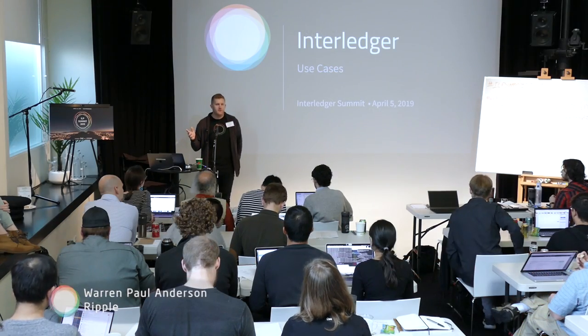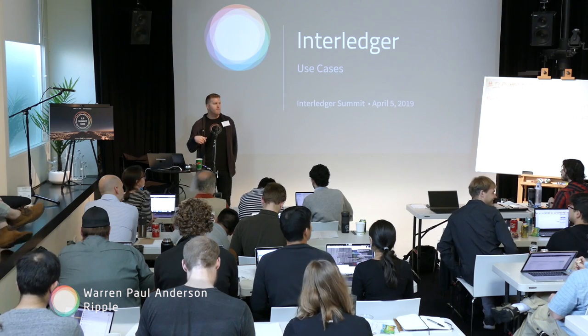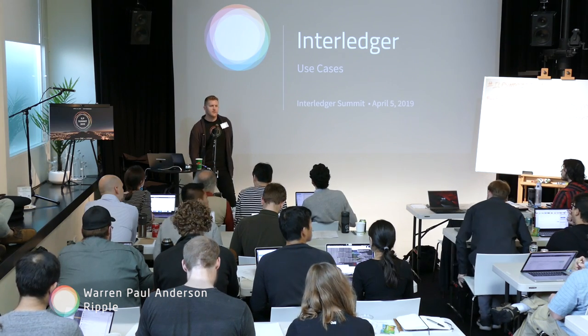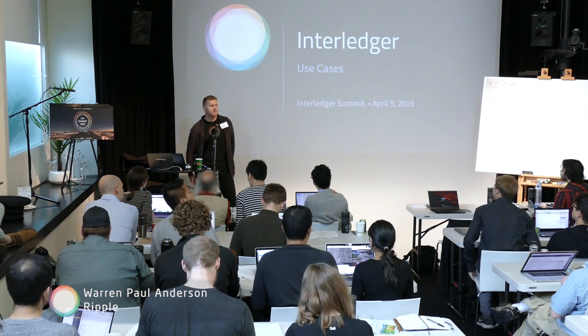My name is Warren Paul Anderson. I'm on the product team at Spring. I joined Ripple three years ago. I started working on the XRP core protocol, XRP Ledger, and then created the XRapid product and recently joined Spring.